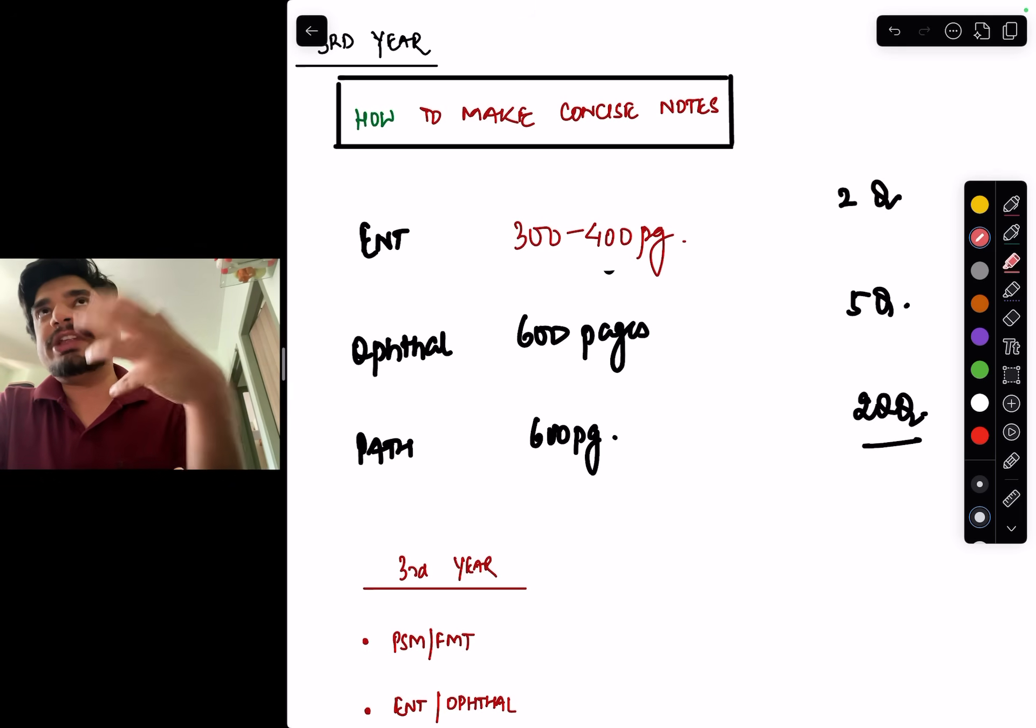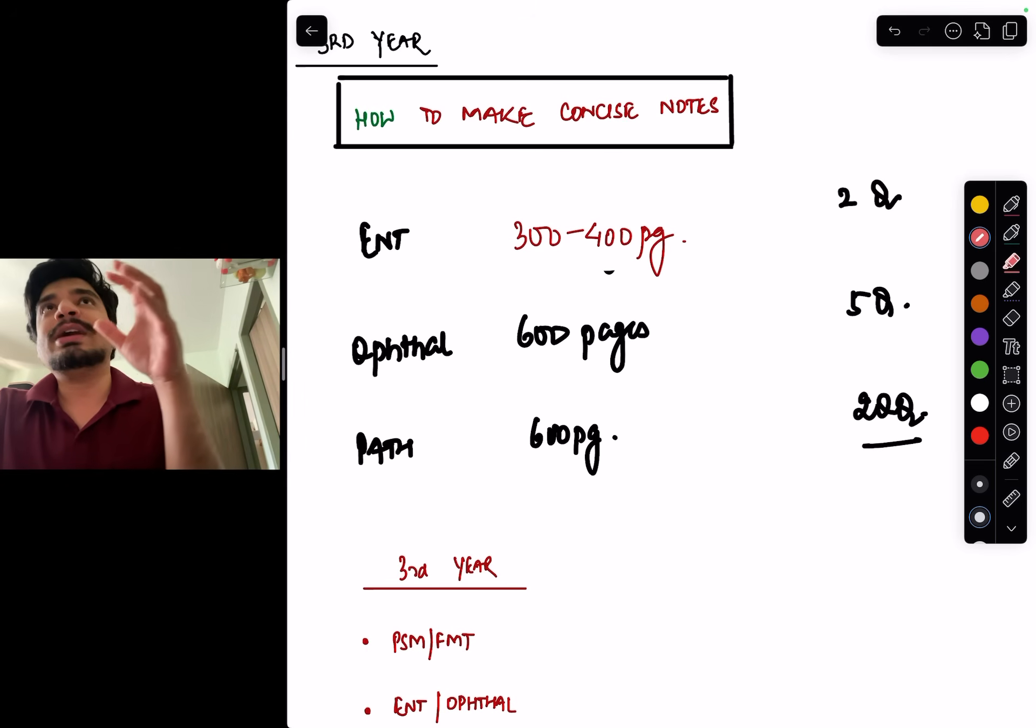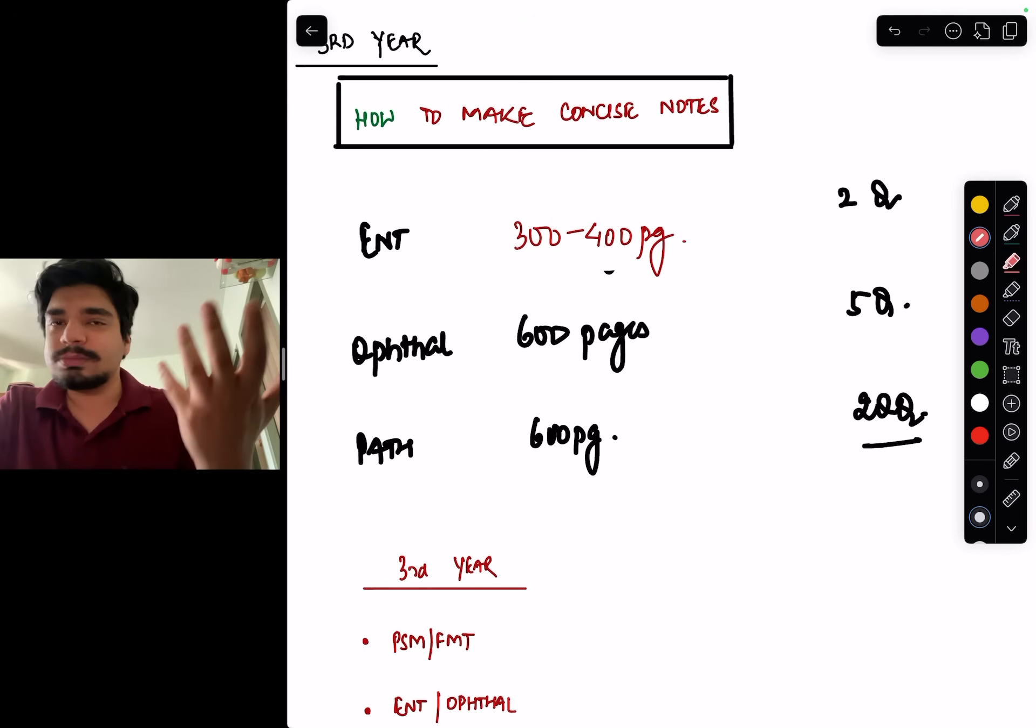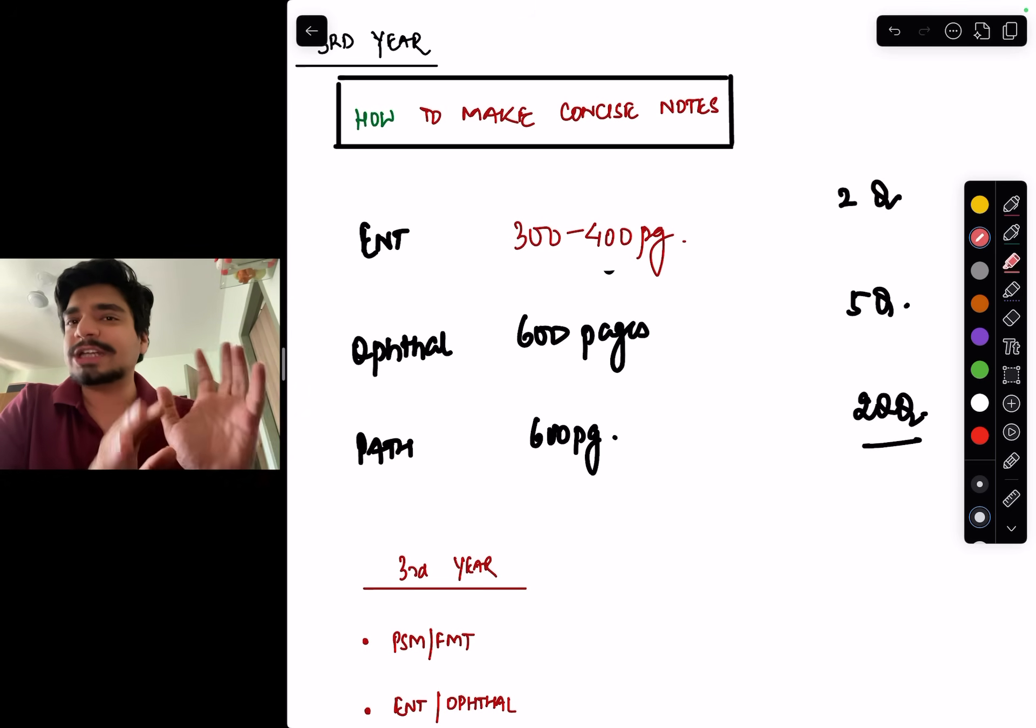But I specifically mentioned a point on how you have to start making concise notes for ENT, Ophthal, PSM, Forensic Medicine and Toxicology. Now, what do I mean by concise notes? And why is this concise note concept important? If you look through your notes, the coaching notes that you will get, the pre-printed notes, are they notes or are they books? I myself was a coaching faculty, but we also know everyone knows that they are more books rather than notes at this point of time.